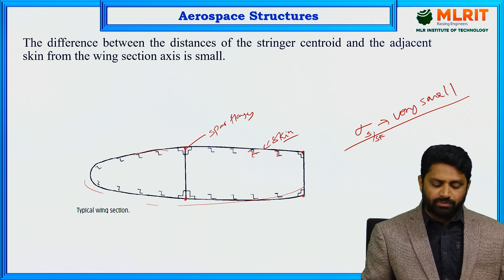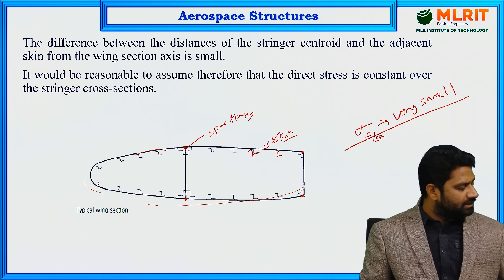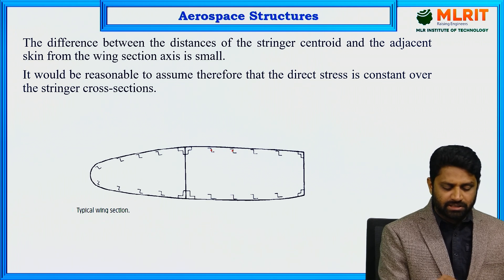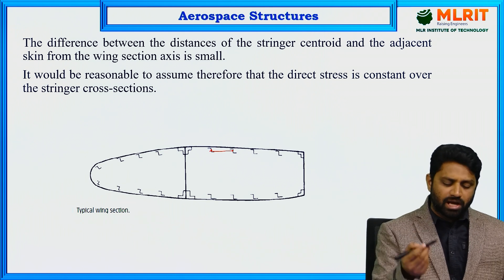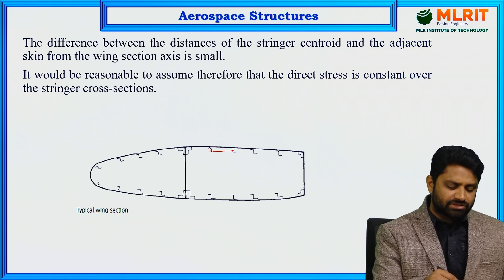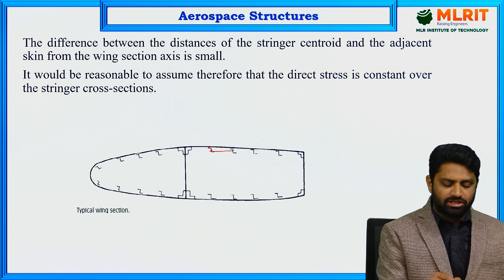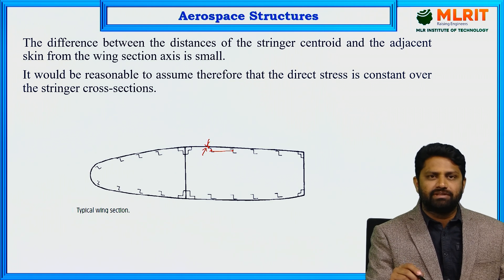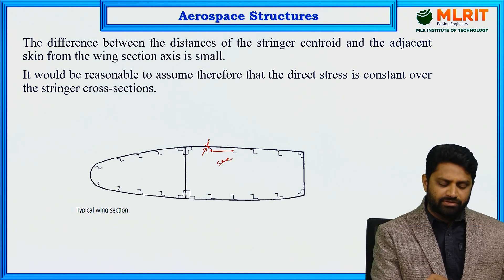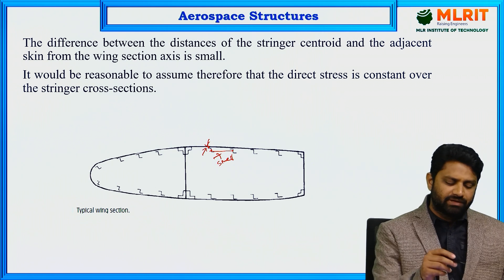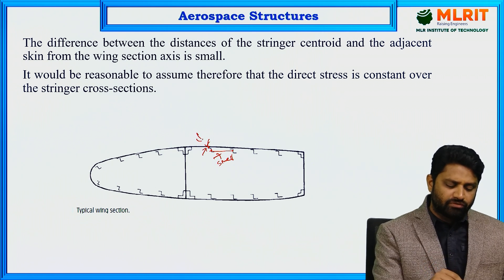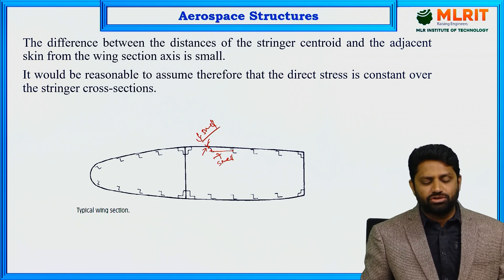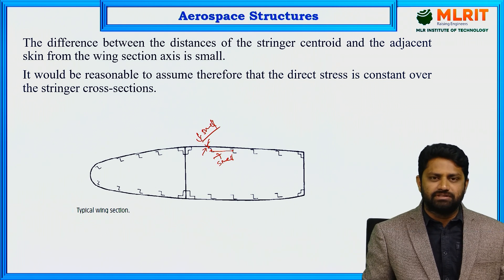Also, the distance between the stringer centroids is small, and the distance between the stringer and the adjacent skin is also small. Because of these two reasons, it would be reasonable to assume that the direct stress is constant over the stringer cross section.